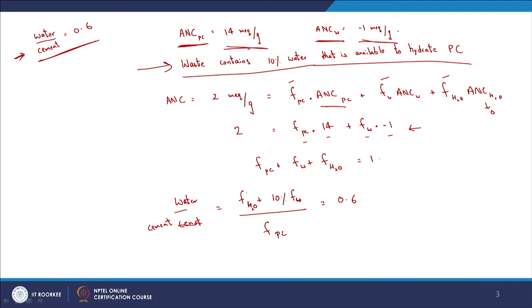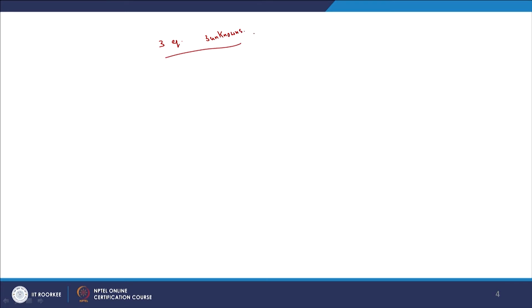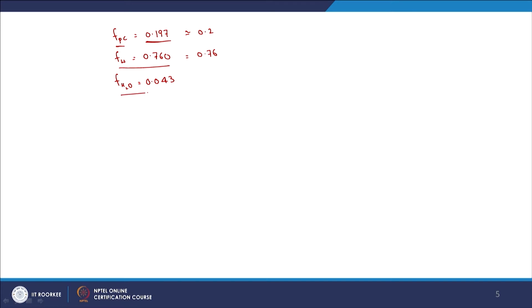With three equations and three unknowns, the system can be solved. The solution is: f_cement ≈ 0.197 (approximately 0.2), f_waste = 0.76, and f_water = 0.043. The sum equals 1 as required. This is a typical example representative of real-world solidification and stabilization design.